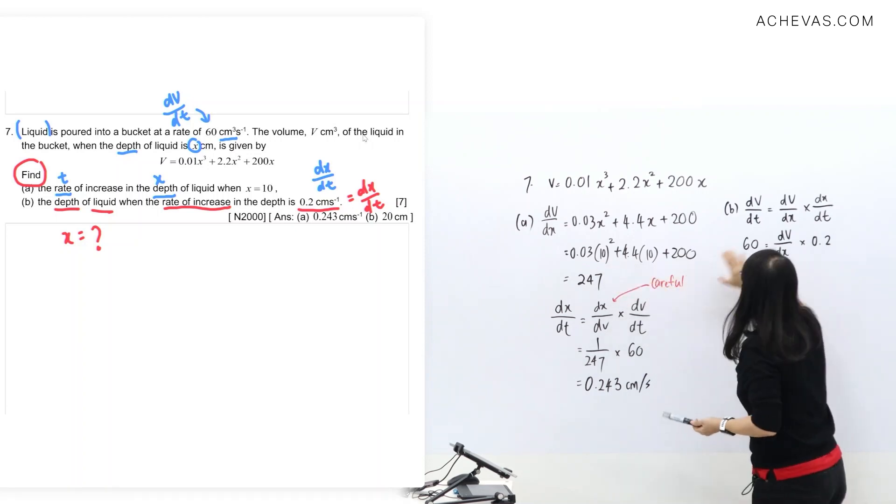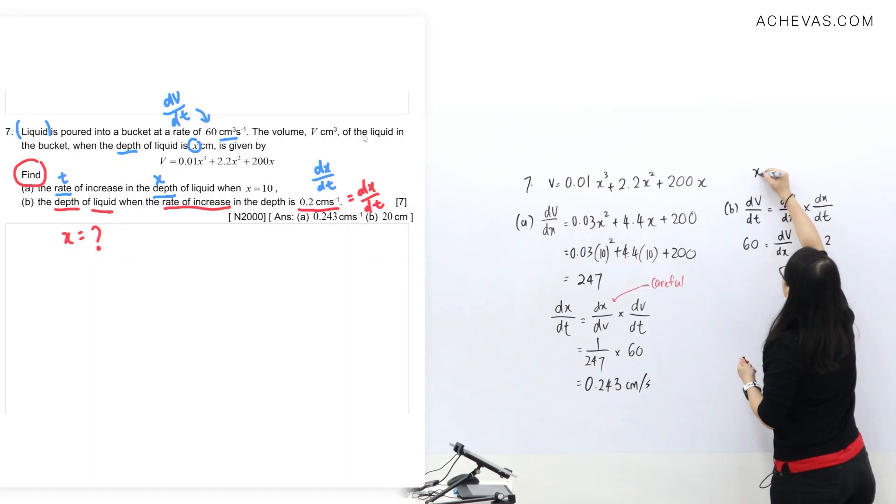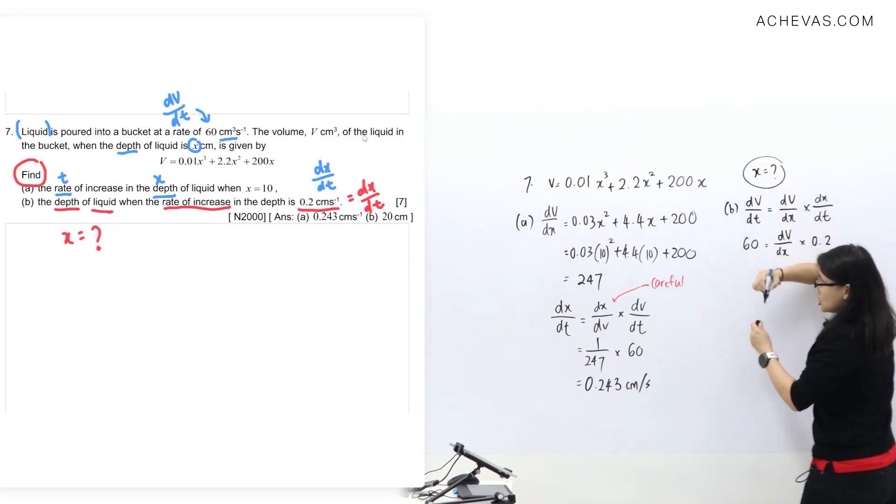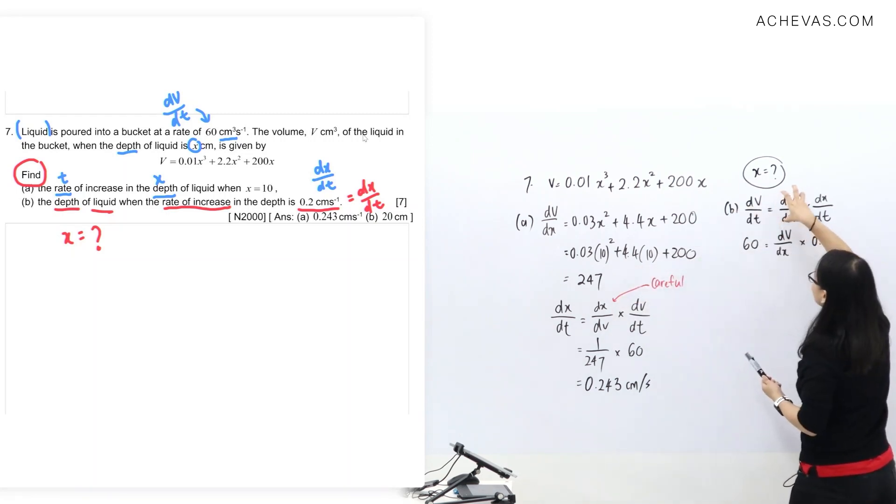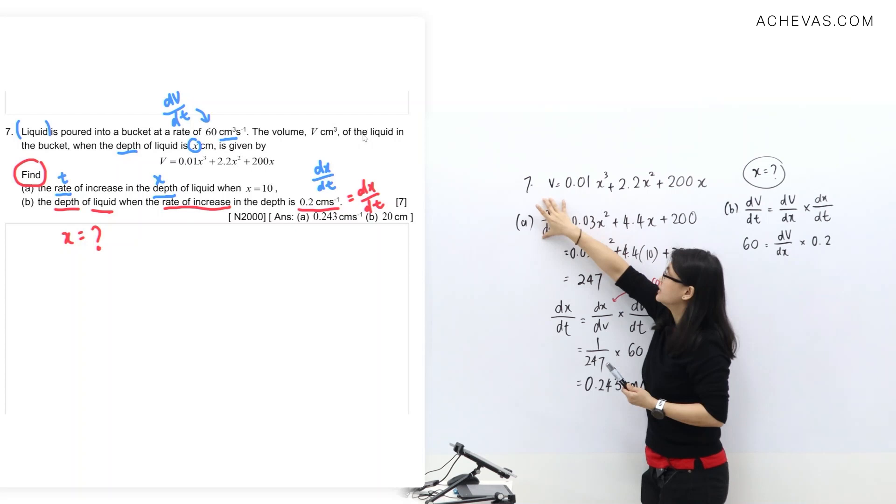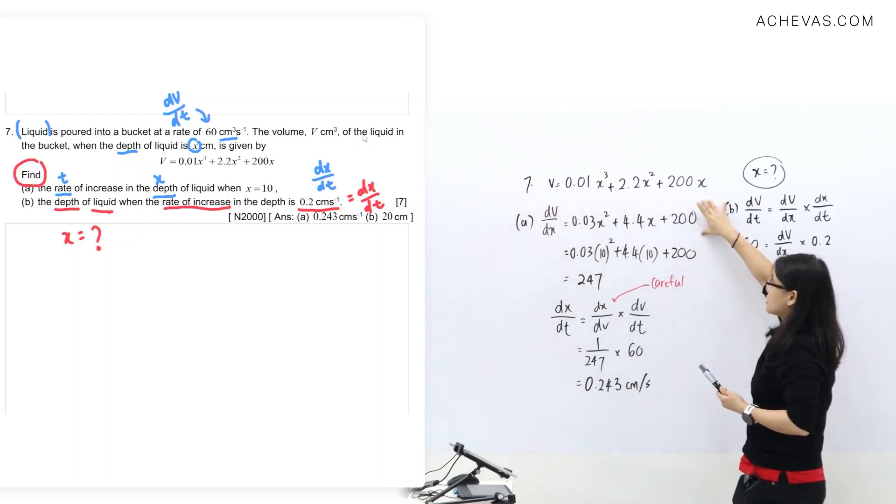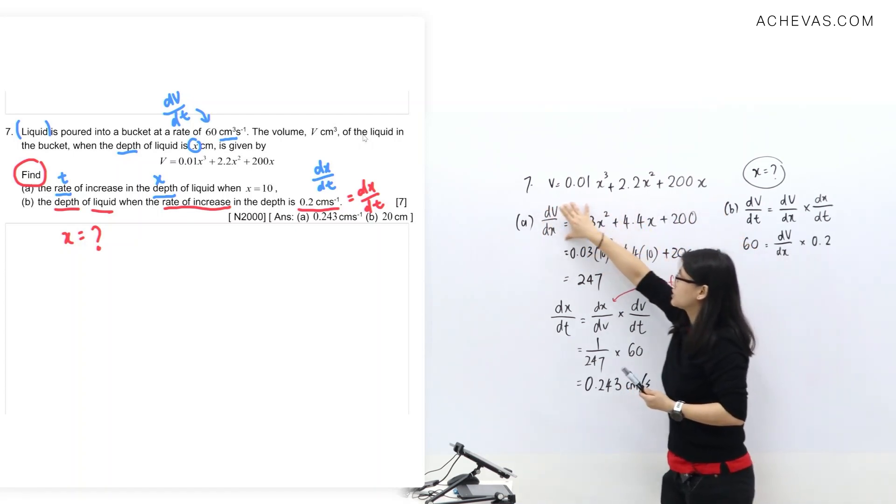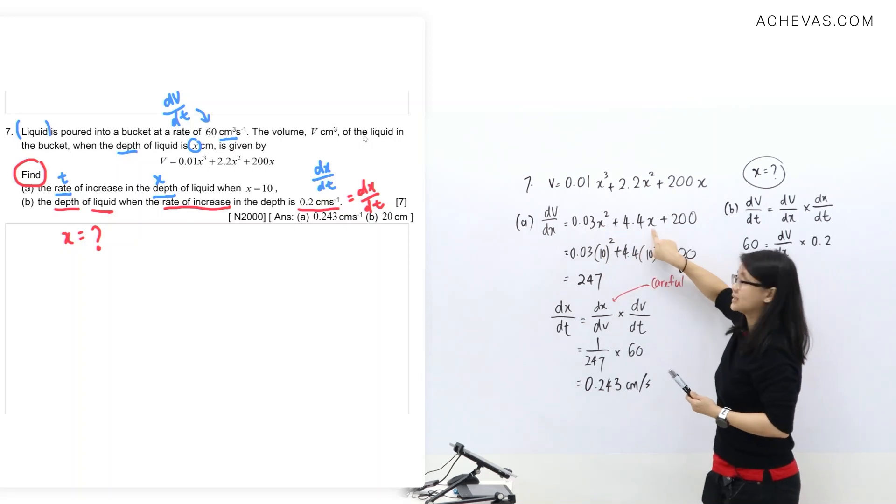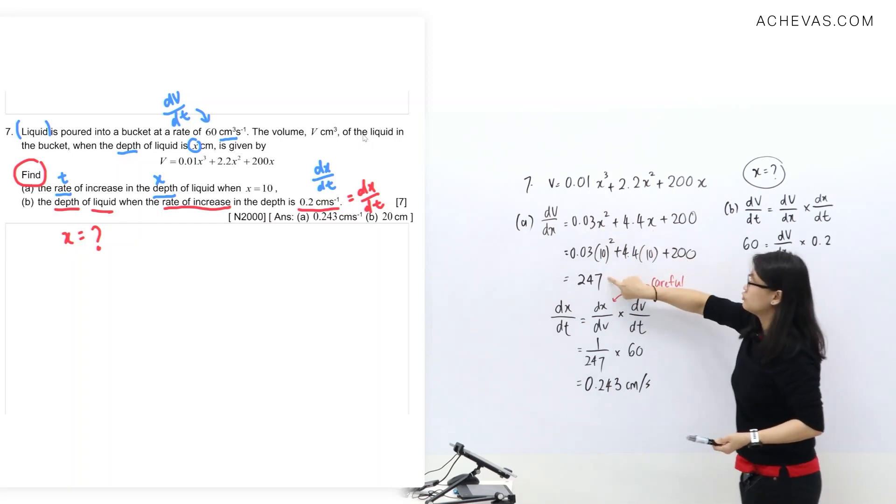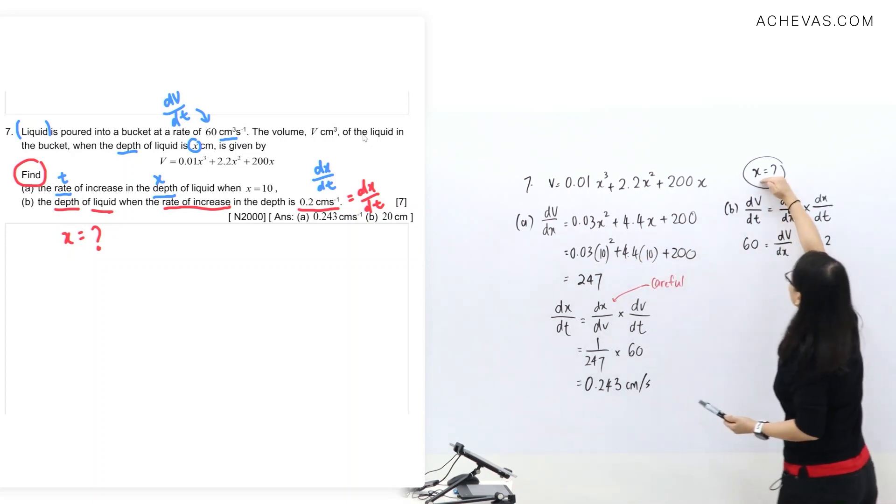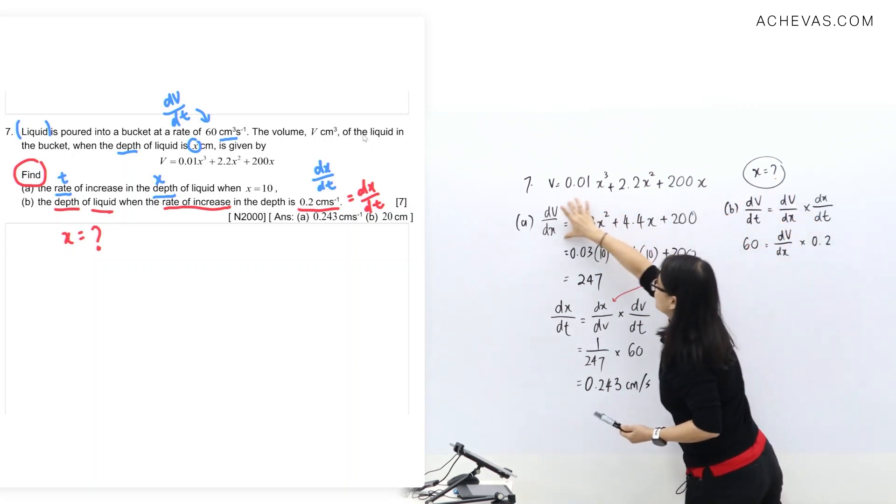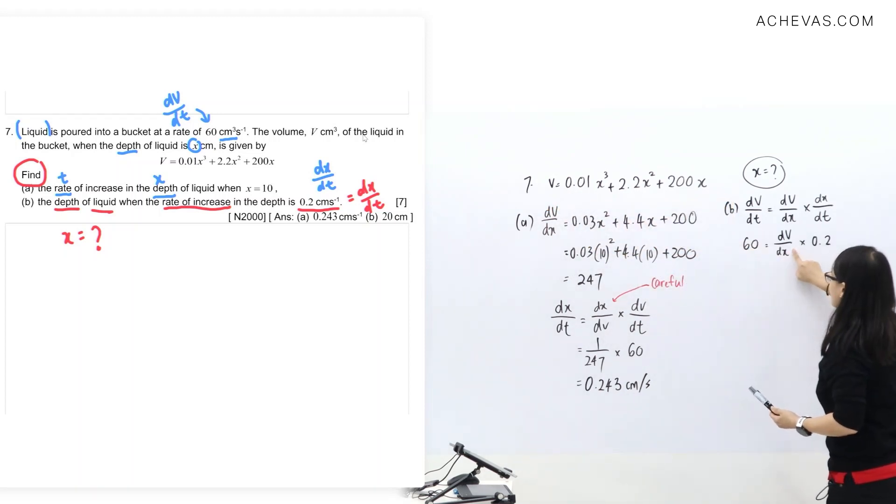Just to let you know, for question B we are going to find x equals question mark, so I cannot use this 247 as dV/dx. So this dV/dx should be this line here - that is like a general value of dV/dx for any value of x. If you get that, so this 247 is specifically for when x is 10. So for this question, I don't know x, so I can only use this general value of dV/dx. So I'm going to just use the chain to find what is the dx value first.